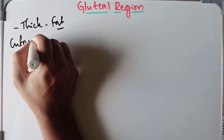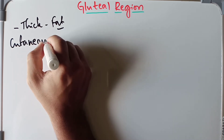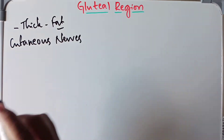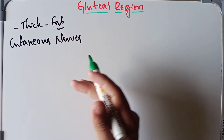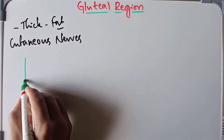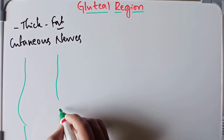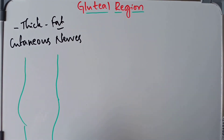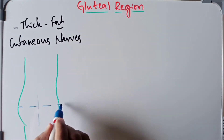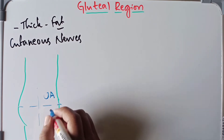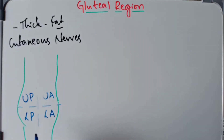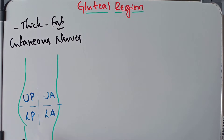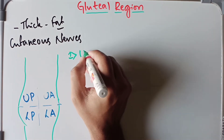Now we begin with the cutaneous nerves in the gluteal region. The cutaneous nerves of the gluteal region are derived from several sources and converge in this region. In the lateral view of the human body, we describe the buttock as having four compartments: the upper anterior compartment, the lower anterior compartment, the upper posterior compartment, and the lower posterior compartment. Different nerves converge through these compartments and supply each one.